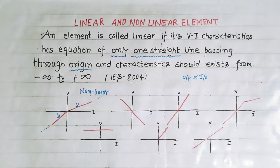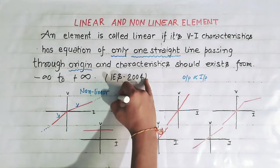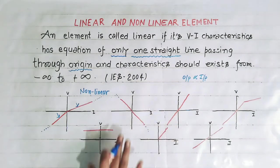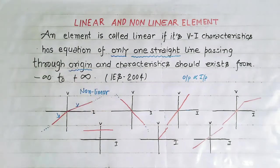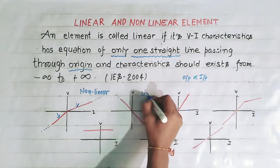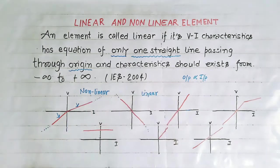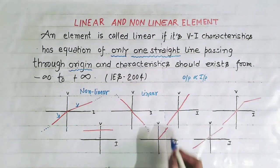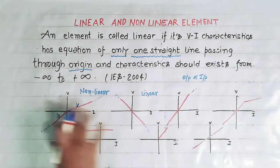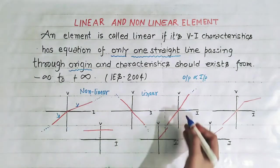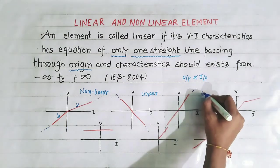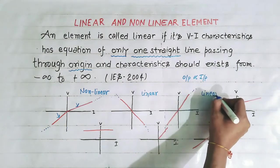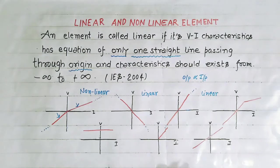Now see this — the characteristic has the equation of only one straight line, extended from minus infinity to plus infinity, and it is passing through origin. So it is a linear characteristic. Now see this — again, the characteristic has the equation of a straight line extended from minus infinity to plus infinity and passing through origin, so it is also linear.